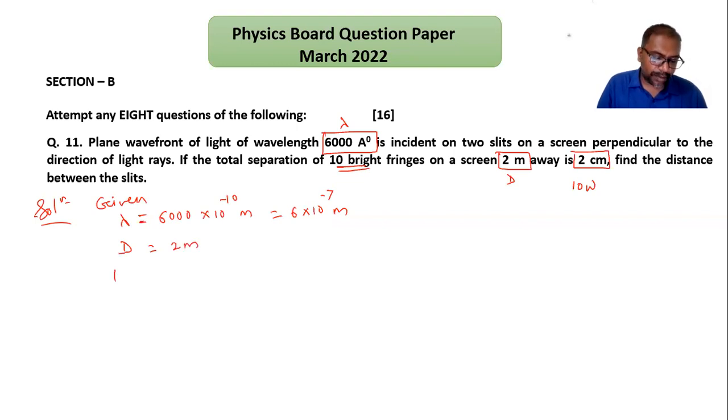Then 10 into the bandwidth is equal to 2 centimeters, so the fringe width w is equal to 2 by 10, so 0.2 centimeters, or we can write 0.2 centimeters as 10 to the minus 2 in meters, or if you want to write it in a number, you can write 2 into 10 to the minus 3 meters.